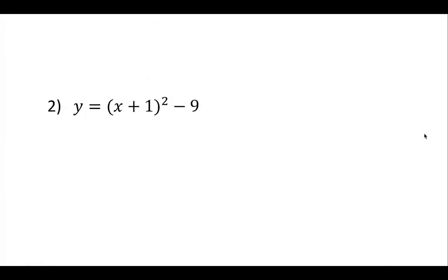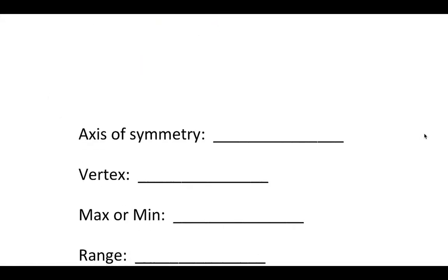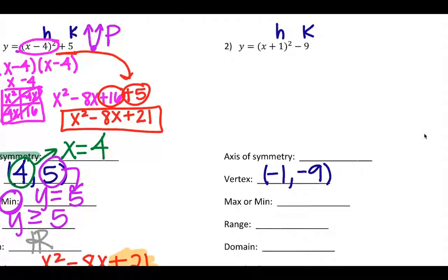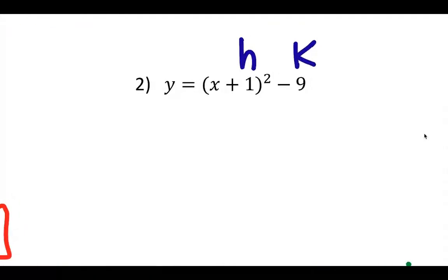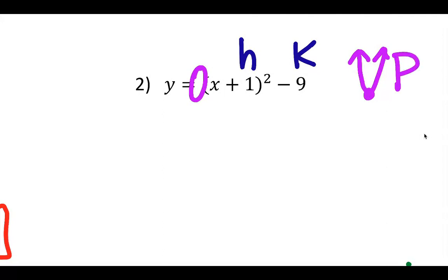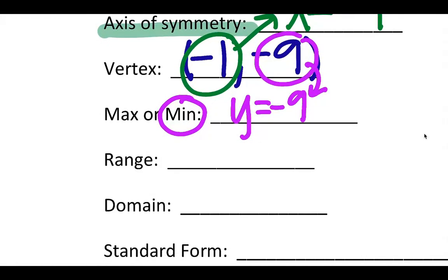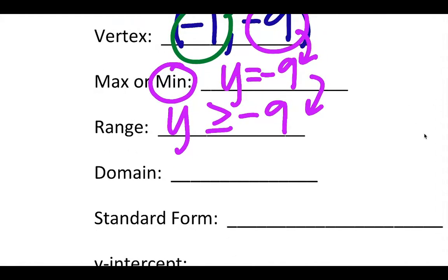Let's do another one. I'm going to start with the vertex, looking at what's in the parentheses. Here's my h, here's my k. The h sign changes: it was positive 1, so now it's negative 1. k is negative 9; I keep it negative 9 — only the one in the parentheses changes signs. There's my vertex: (-1, -9). Axis of symmetry: x equals negative 1. This is a positive leading coefficient, so the graph is facing upward — this is going to be a minimum value at y equals negative 9. Range is y greater than or equal to negative 9. Domain is always, always, always all real numbers.